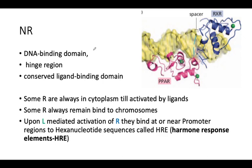A nuclear receptor is composed of three components: the DNA binding domain, a hinge region, and the conserved ligand binding domain. This is a straightforward diagrammatic presentation. The example shown is PPAR, which is composed of a DNA binding domain, then a loop structure, followed by a conserved ligand binding domain.